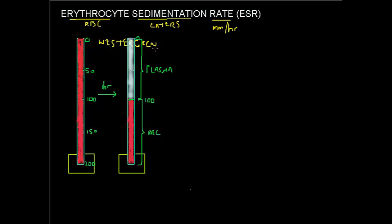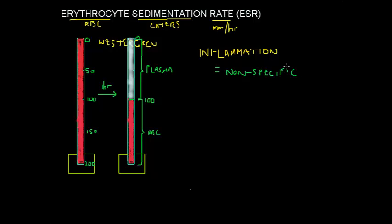Under normal circumstances, red blood cells won't settle much — maybe five, ten, or perhaps twenty millimeters, depending on factors like age and gender. When they settle more than that, it may be an indicator of something wrong, and usually that something would be inflammation. An ESR is a marker of inflammation, but it is very important to note that this marker is totally non-specific. You cannot make a particular diagnosis from the ESR — you can only say something is going on, but not what.